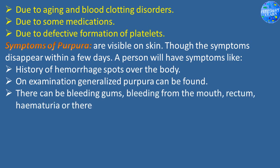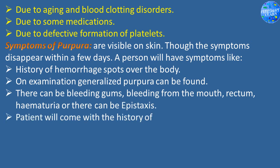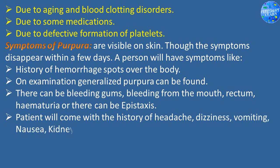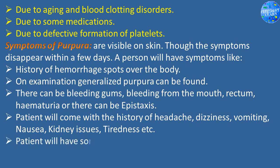There can also be rectal bleeding, hematuria, or epistaxis. The patient will come with a history of headache, dizziness, nausea, kidney issues, tiredness, etc. The patient will have sore, swollen joints, particularly in the knees and ankles.